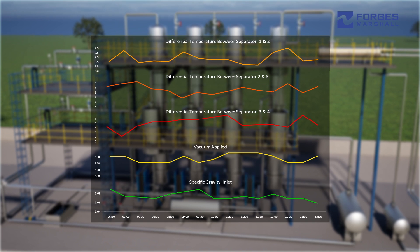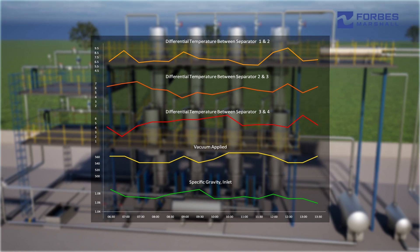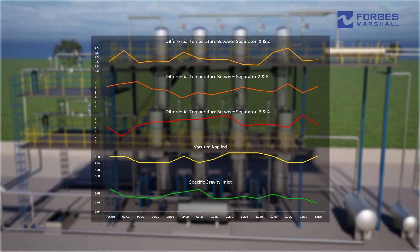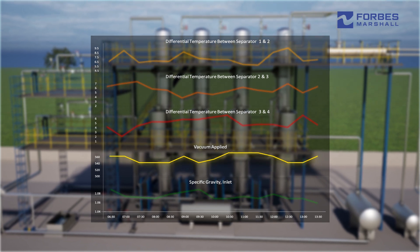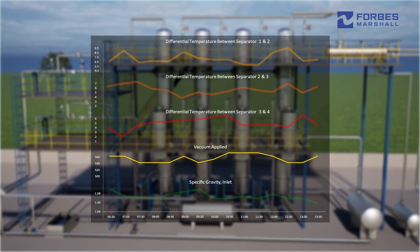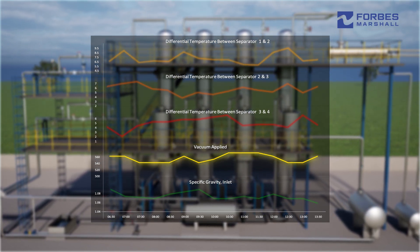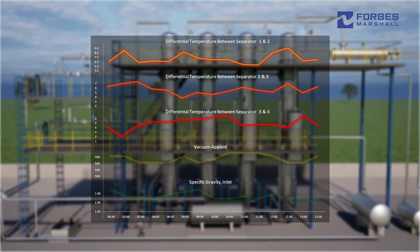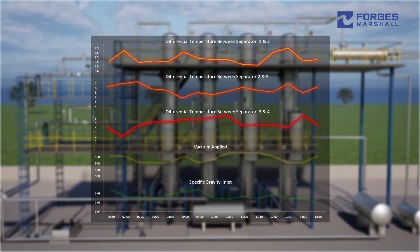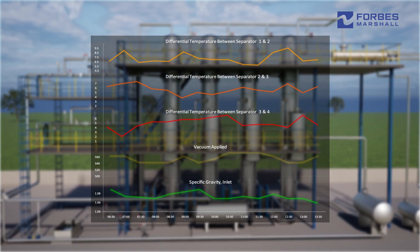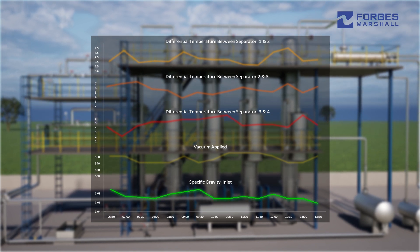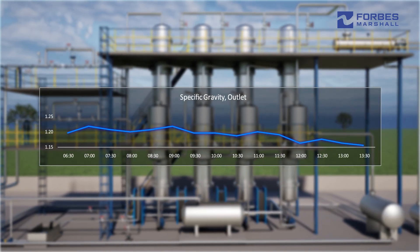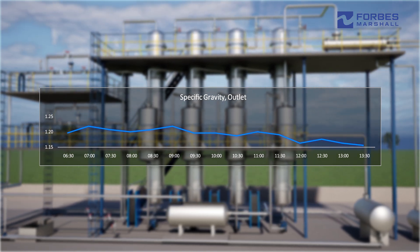During actual operations, significant variations in parameters besides steam pressure can be observed across multiple effect evaporators. This includes variations in vacuum, which affects the boiling point and results in variations in evaporation, variations in differential temperatures between effects, and variations in inlet feed flow and concentration. These ultimately cause variations in outlet concentration.